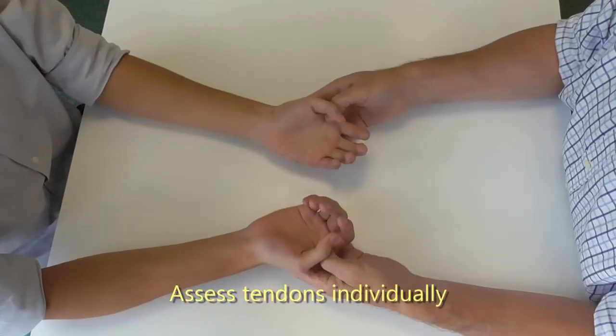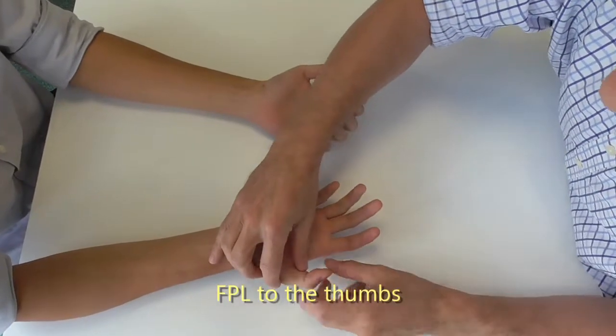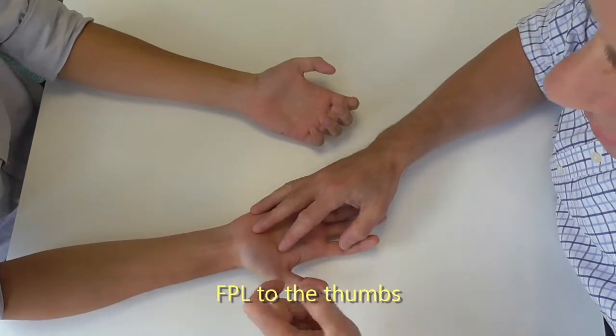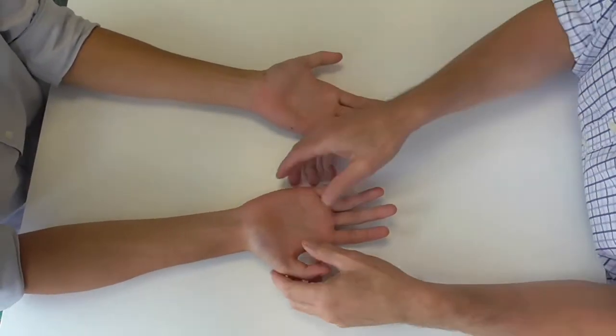Now I'm going to assess your tendons individually. First of all, I'm going to assess the FPL to the thumb. So if you could just hook your thumb for me like that and stop me doing that. And do that for me. So the FPL is intact both sides.